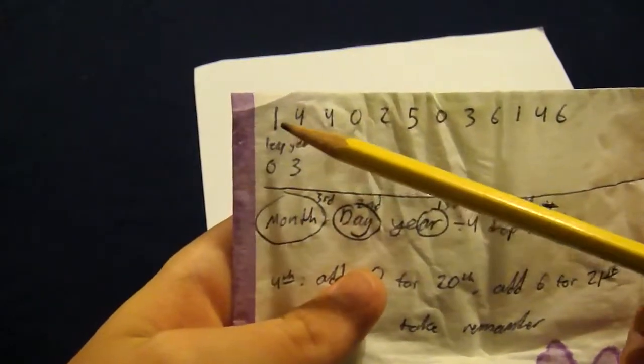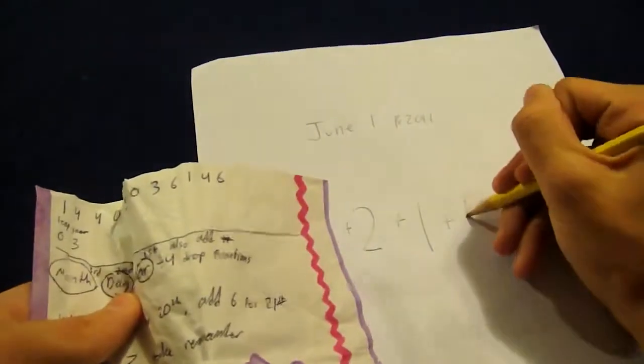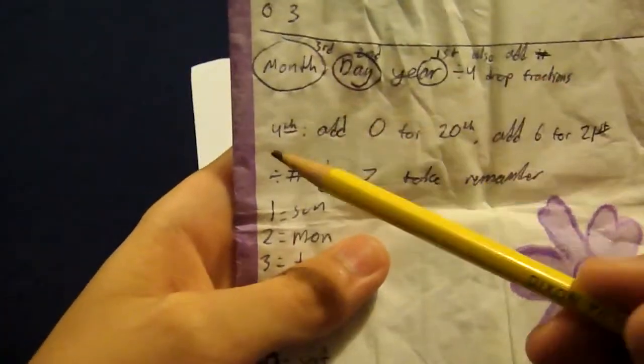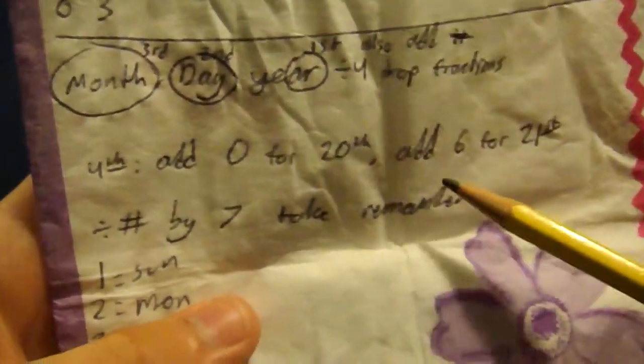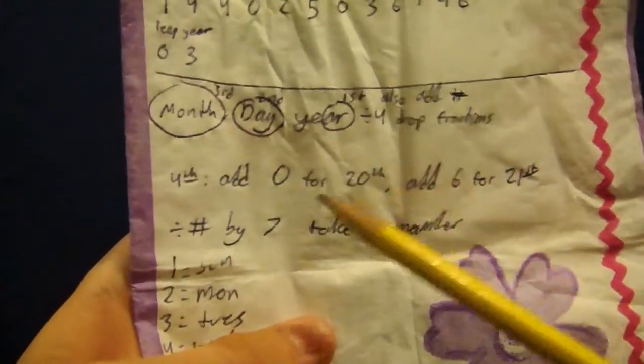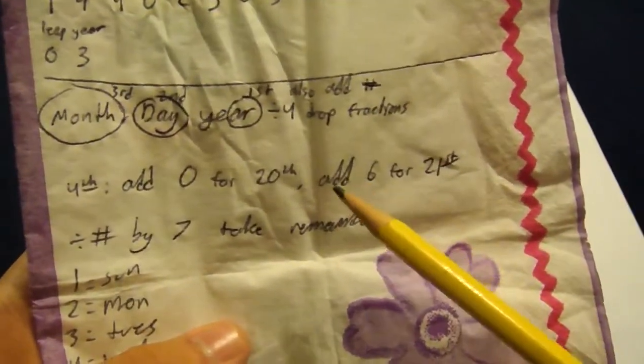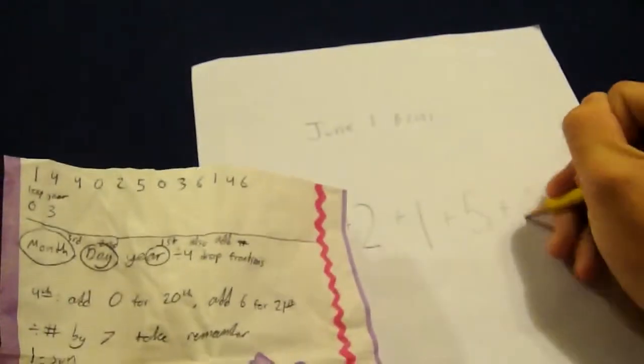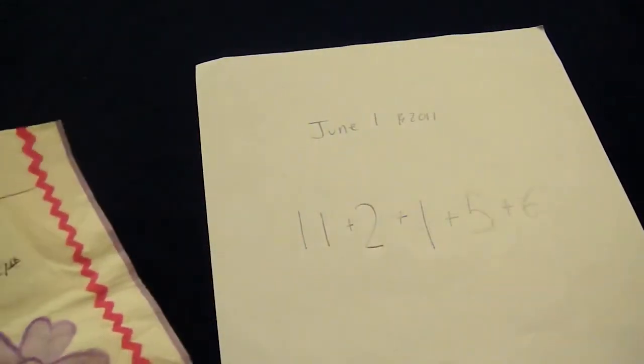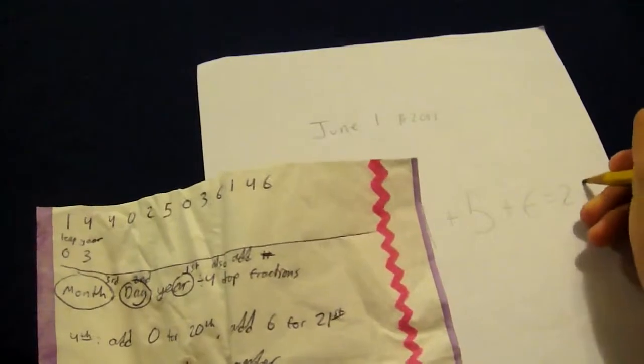So June... You can see it goes January, February, March, April, May, June. June is 5. So you're going to add 5. And then you're going to add... Last thing... You can see here 4th. It says add 0 for 20th and add 6 for 21st. Don't ask me why this is, but it just is. So if it's in the 20th century, you don't have to add anything. You just add 0. And then if it's in the 21st century, which is the 2000s, you're going to add a 6. So because it's 2011, you're going to add a 6. Okay, so you have these 5 numbers. You add them together and you get 25. So 25.